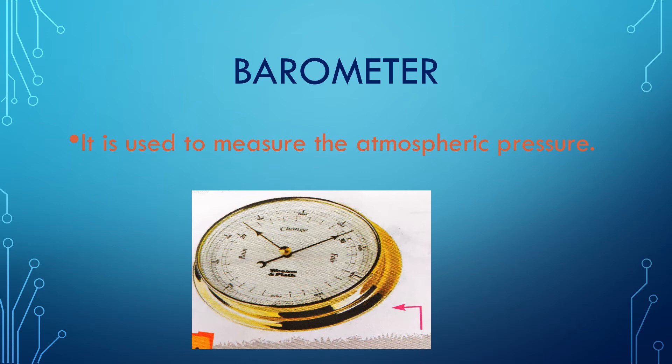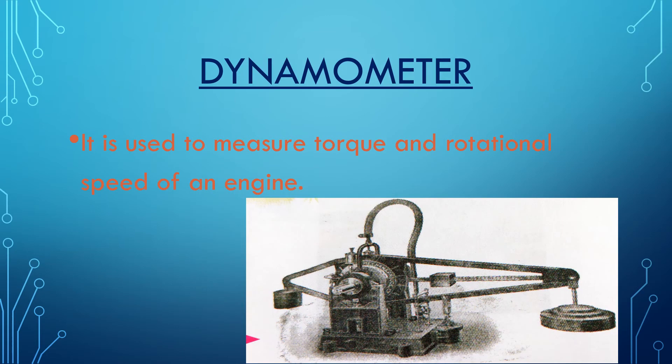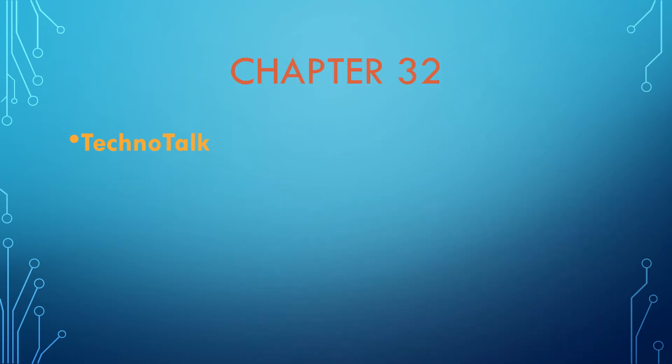This is round-shaped, like a speedometer. Next is the dynamometer. Dynamometer is used to measure torque and rotational speed of an engine. The speed and torque of rotating engines is measured with the help of this scientific instrument called the dynamometer. With this, Chapter 31 on scientific instruments is complete.